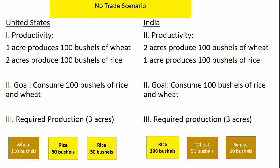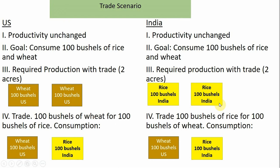Moving on to the trade example. In the trade scenario, we're going to assume the productivity is unchanged and the consumption goal is unchanged. However, in terms of required production, once we allow for trade, we can get by using only two acres of land in the United States, and we're going to devote those two acres to what our land is best suited for — producing wheat. So one acre produces 100 bushels of wheat, the other acre another 100 bushels of wheat. In India, to achieve the desired consumption level with trade, India will produce 100 bushels of rice on one acre and another 100 bushels of rice on another acre.